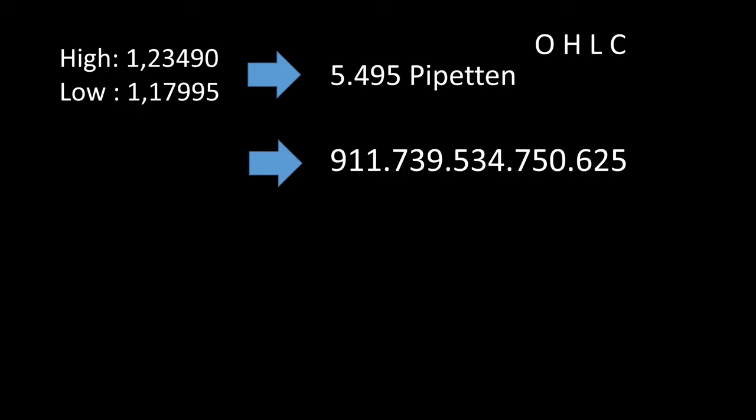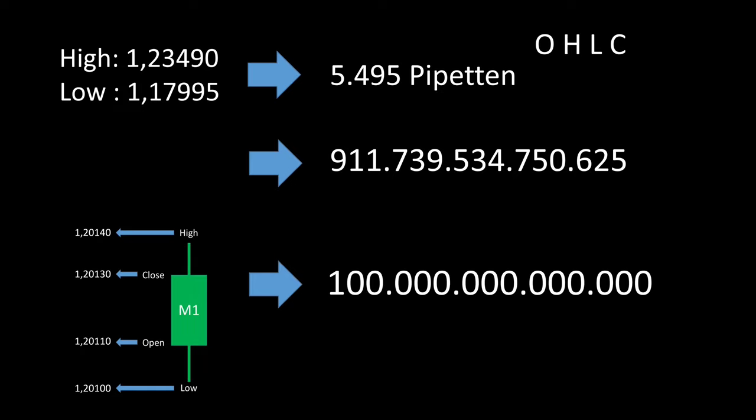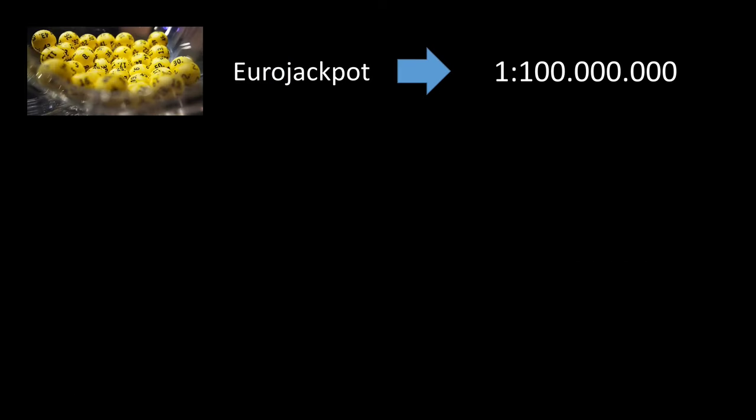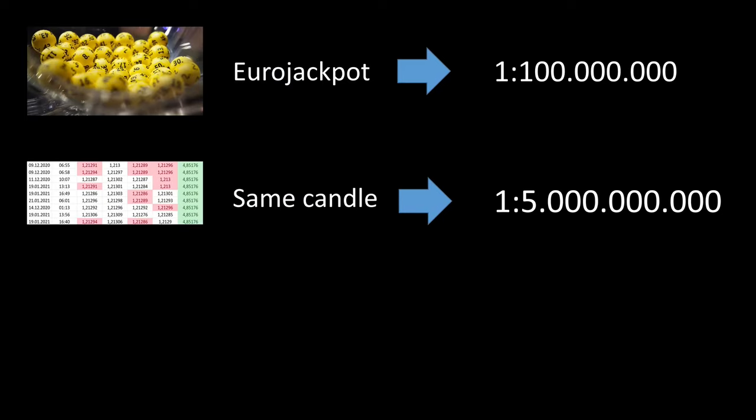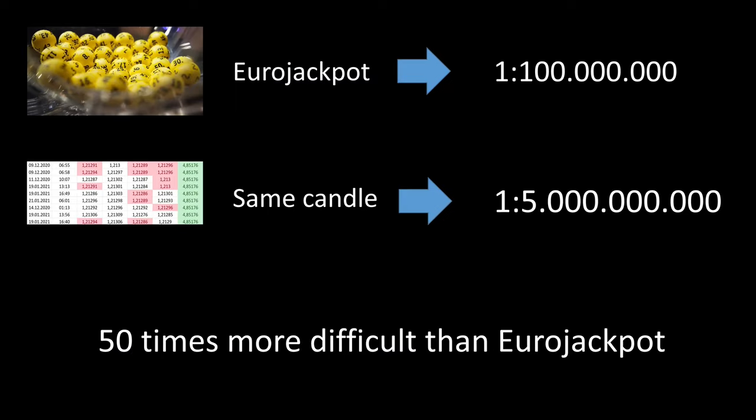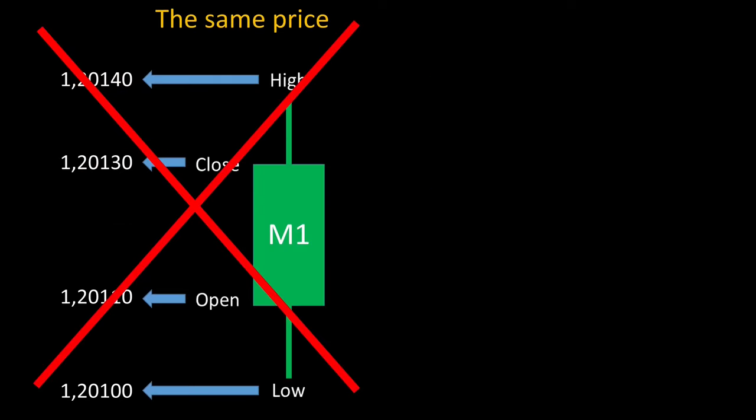However, the possibilities are clearly limited due to the candle conditions, so I would only like to calculate with 100 million possibilities here. We now have to put this value in relation to 65,000 candles. In the Euro jackpot, the probability of a direct hit is around 100 million. In order to achieve matching candlestick values, the probability is 1 in 5 billion. This means that the probability of reaching two identical candlesticks within this period is 50 times more difficult than achieving a direct hit in the Euro jackpot.